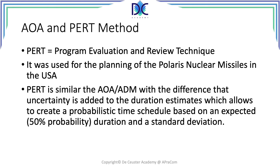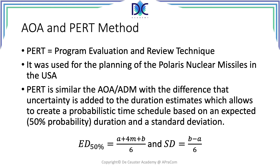Every activity has natural variations in duration that we cannot avoid — the time to complete something is not always the same. Based on this, we can calculate an average and a standard deviation. The PERT formula provides an expected duration with 50% probability: (a + 4m + b) / 6, where a is the optimistic estimate, b is the pessimistic estimate, and m is the most probable estimate. The standard deviation is given by (b − a) / 6. This is the probabilistic element that distinguishes PERT.